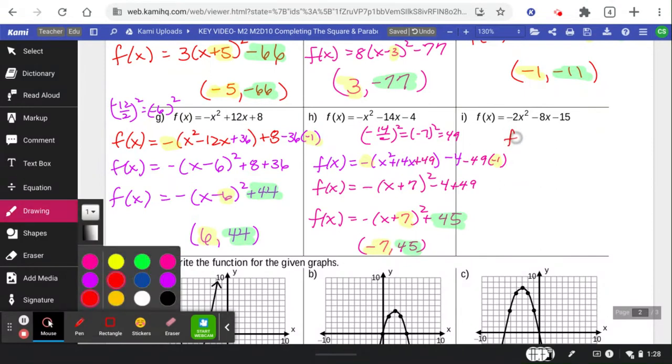Last, we have to divide out a negative 2. 4 divided by 2 is 2. 2 squared is 4. We're going to be adding 4 and subtracting 4 negative 2 times. That gives me the 2 quantity x plus 2 squared factors. And we get negative 15 plus 8, which simplifies down to negative 7.